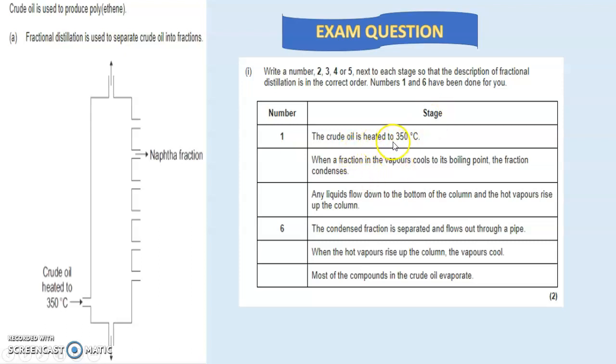We know that the crude oil is first heated to 350 degrees Celsius. You've got to figure out what happens next. You could pause the video and give it a go—literally write down the numbers 2, 3, 4, and 5—and then come back and check the answer.